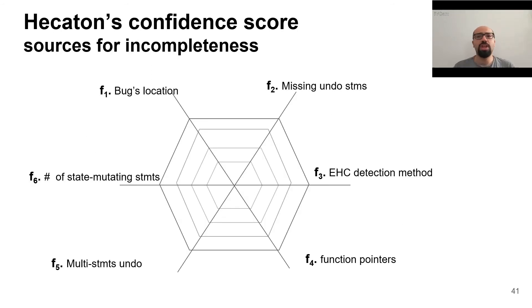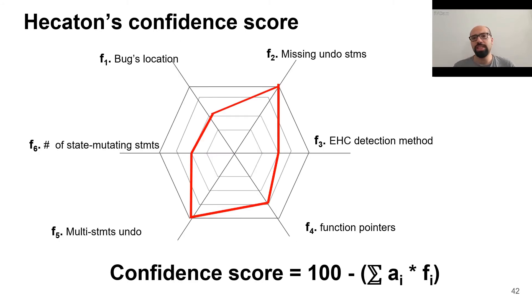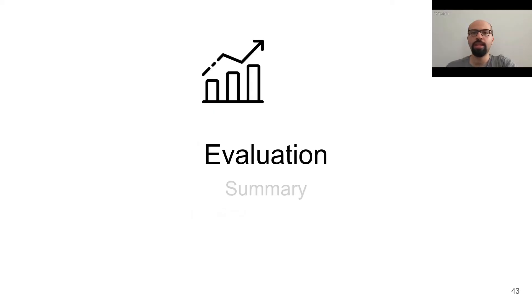Hecaton, however, does not always produce complete bonots, which can result in an incomplete system call undo. We identified six major factors contributing to this incompleteness and discussed them in our paper. We quantify these factors and from them build a confidence score — each factor contributes to bonot incompleteness differently. We use real bugs to tune and adjust the coefficients of the confidence score.